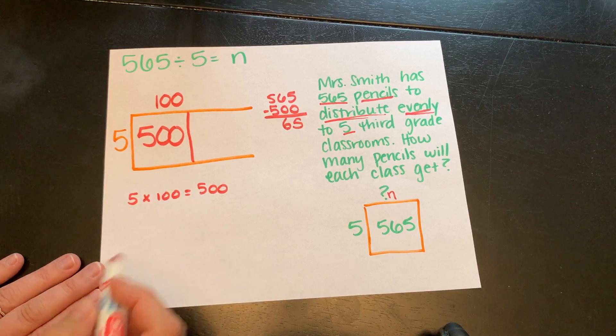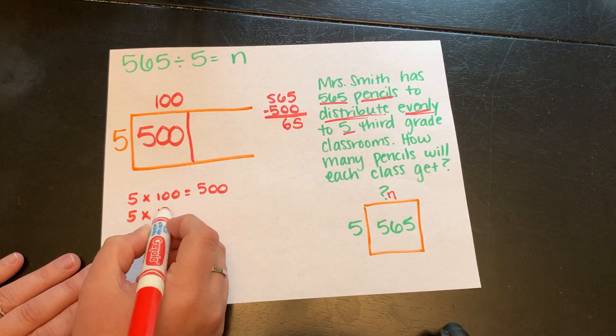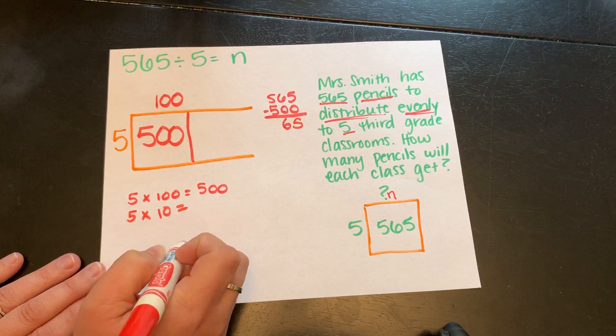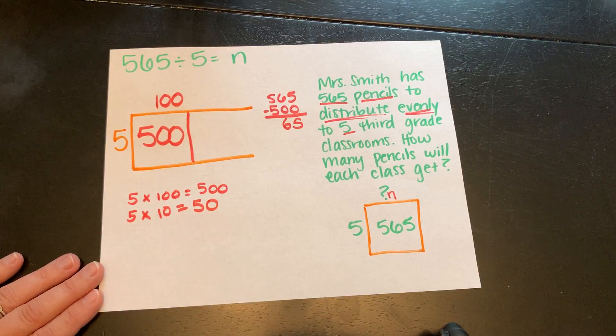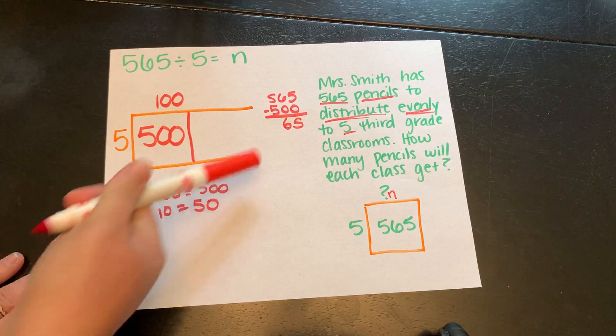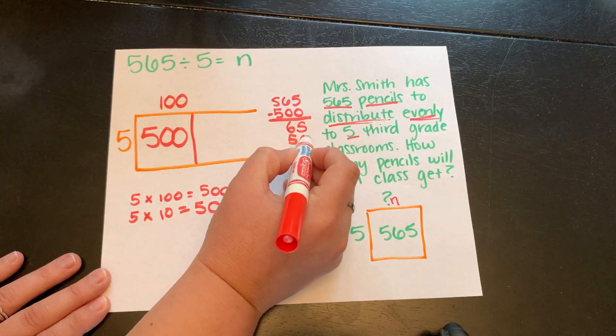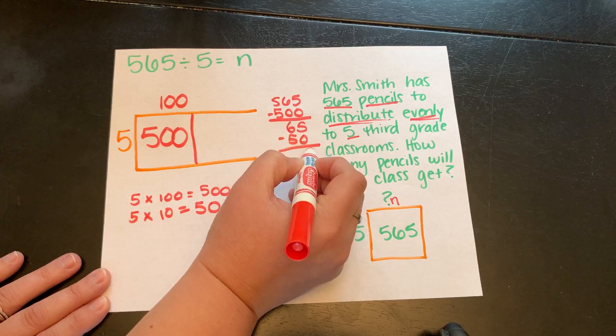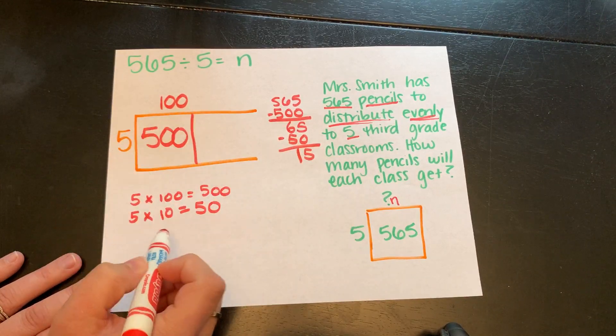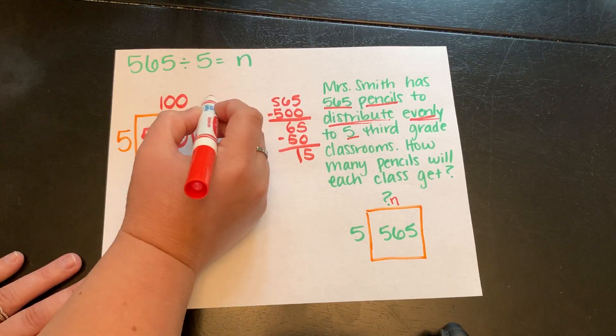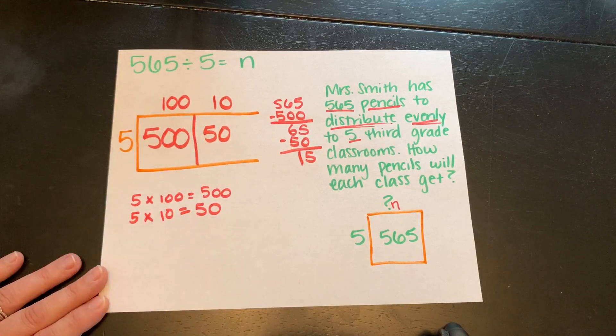Again, think in easy numbers. Another friendly number we mentioned is multiplying by 10. What's 5 times 10? 50. 5 times 10 is 50. Can I get a group of 50 out of 65? I sure can. So 5 minus 0, 6 minus 5. So what I just did there was I did 5 times 10. 5 times 10 equals 50. Those partial quotients go on top.